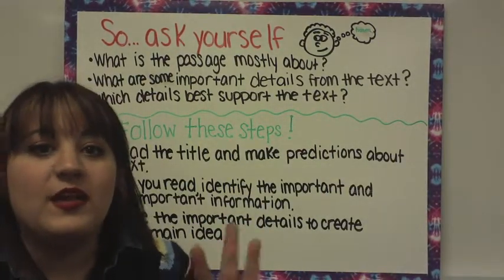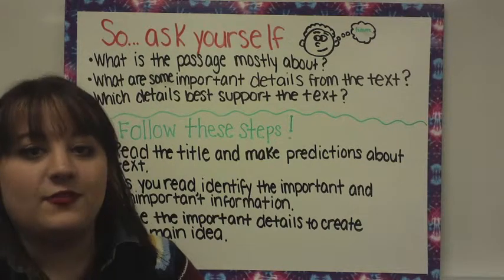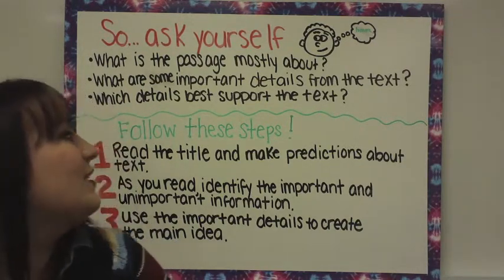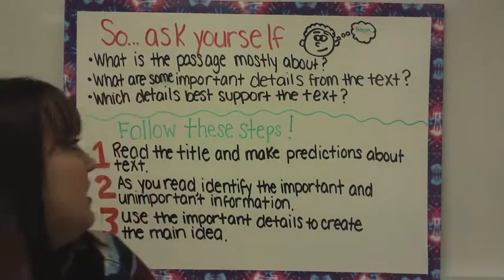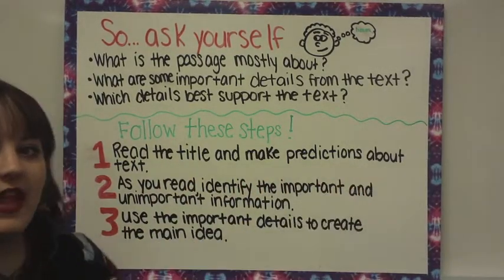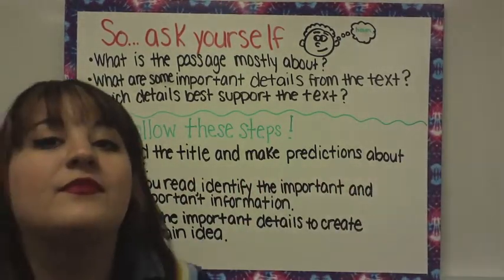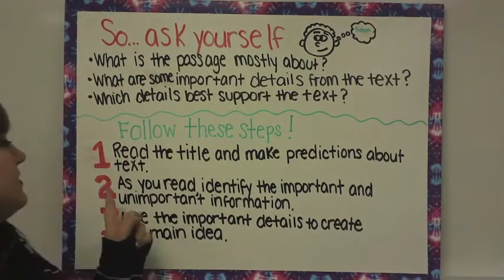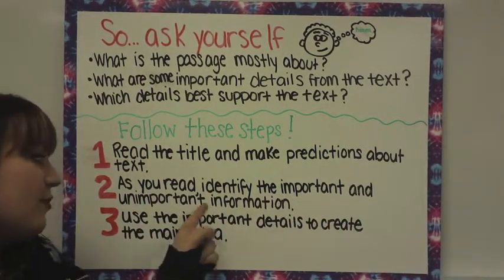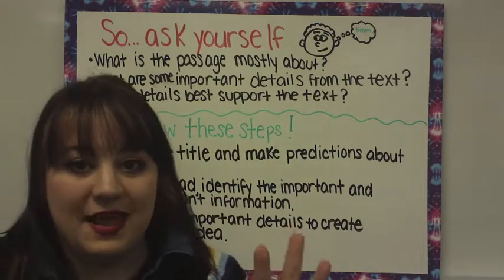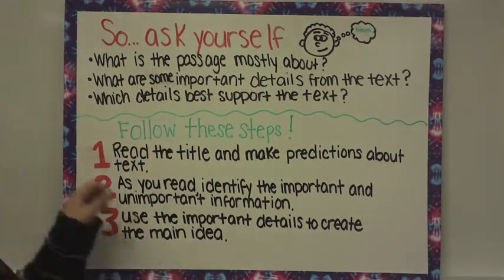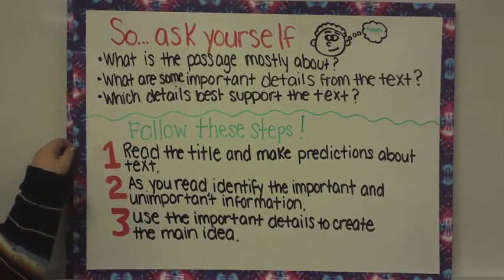I've come up with three easy steps for you guys to find the main idea. The first step is to read the title and make predictions about the text. The second is, as you read, identify the important and unimportant information. And step number three is to use the important details to create the main idea.